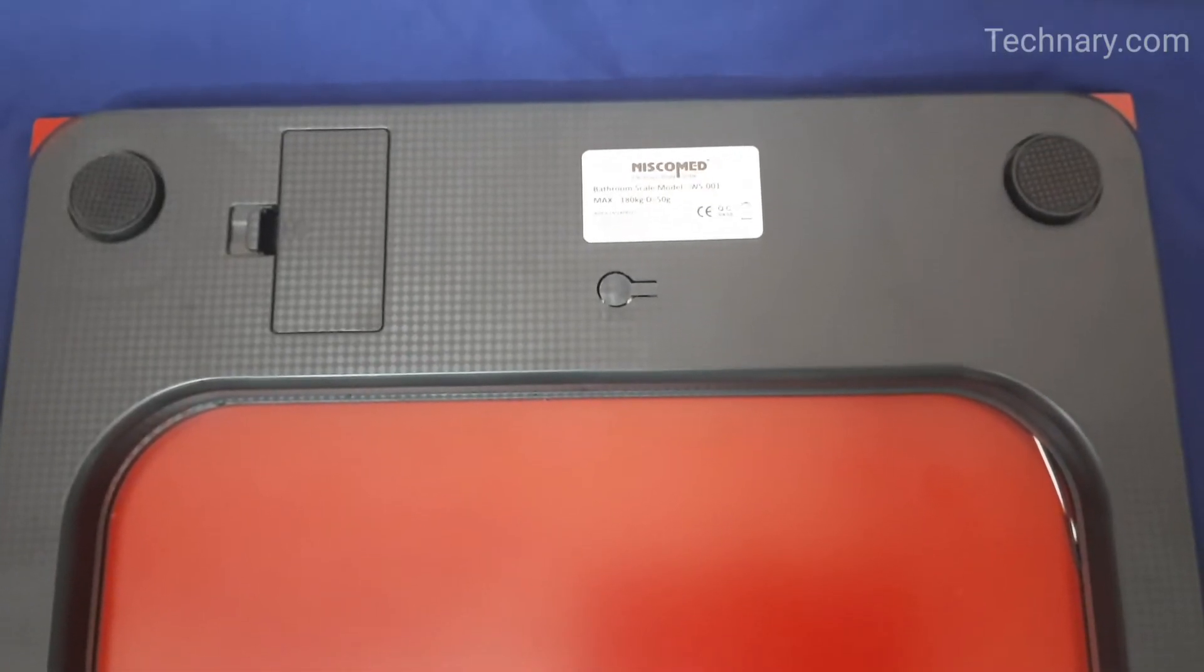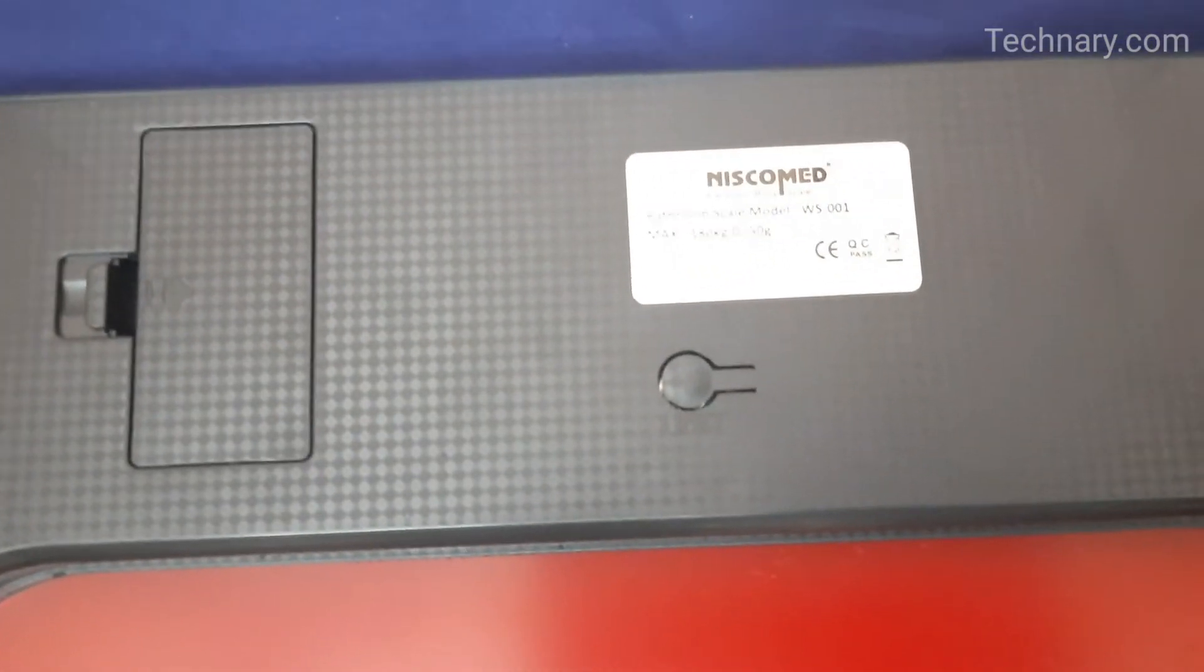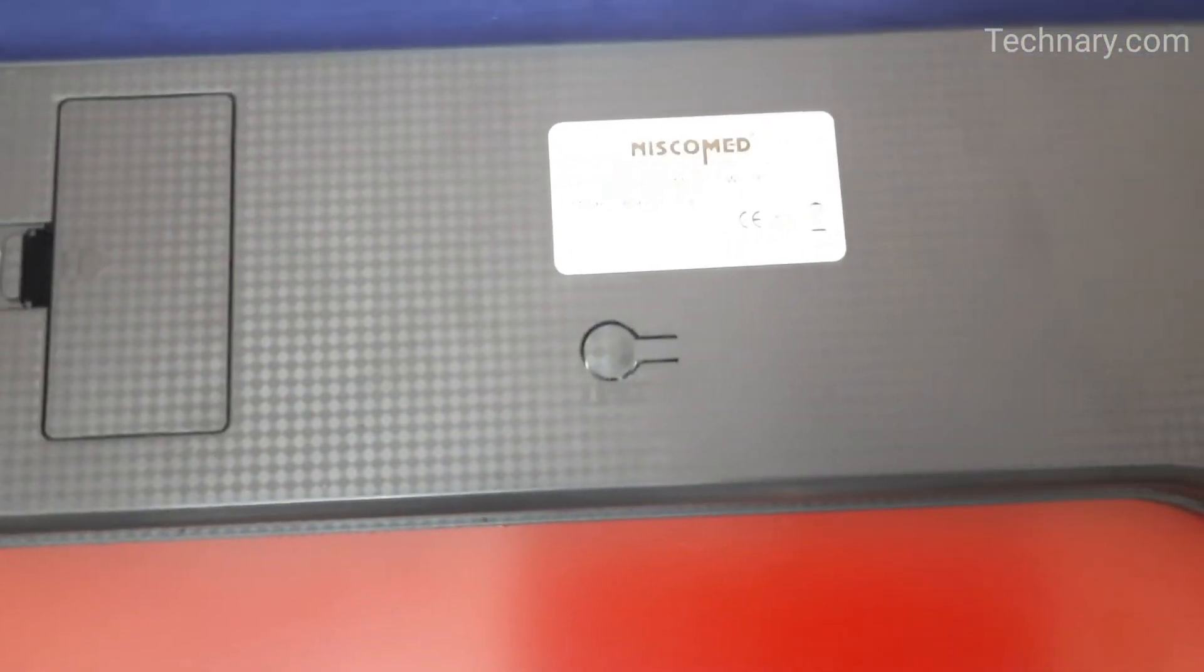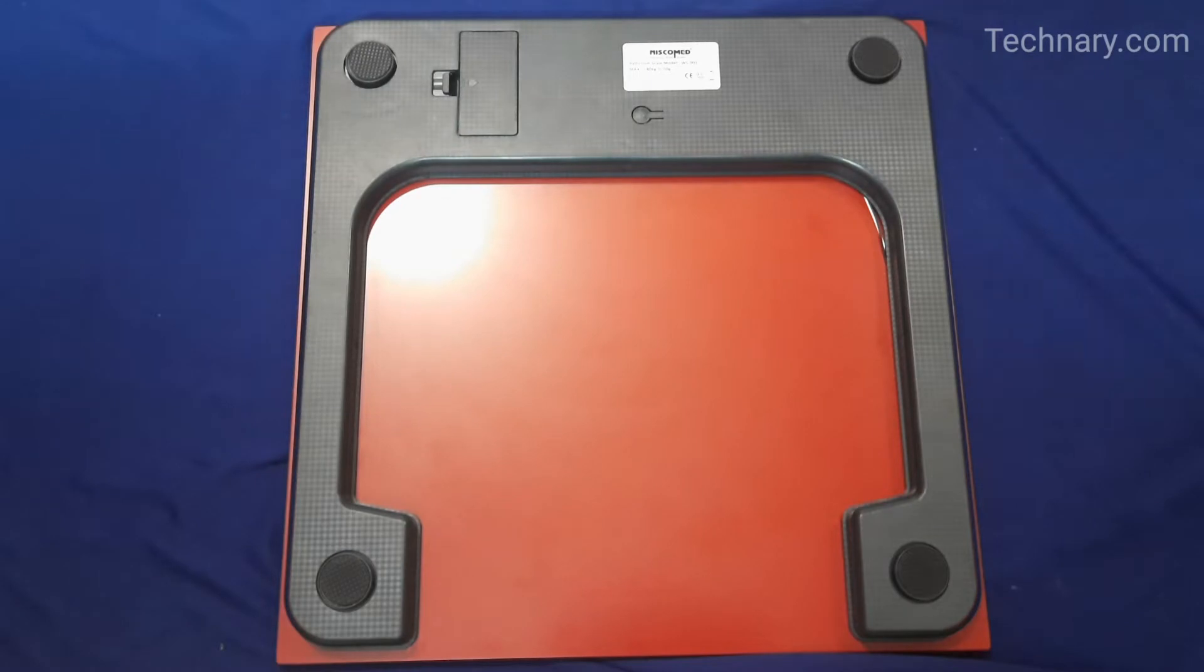This is the back side of the weighing scale. This is the slot for inserting the triple A batteries. There's also a unit button as you can see. When switched on it will switch between the units that is from kg to LBS and back and forth.